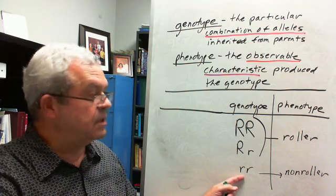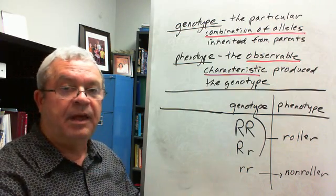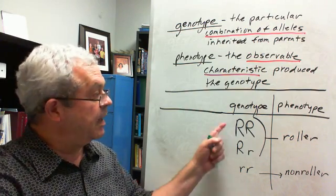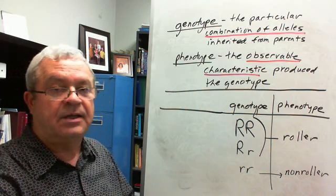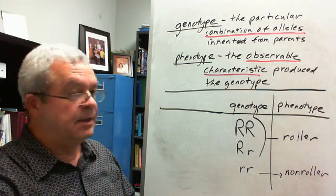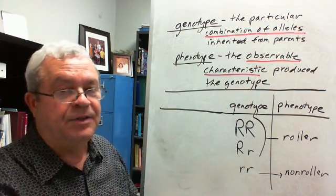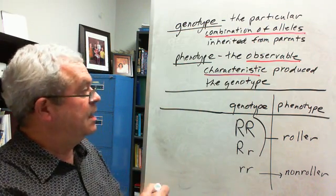Well, she knows what her genotype is. The non-roller does. If you're a non-roller, you have that genotype, right? If you're a roller like me, you automatically know what you are. Do you know if you're homozygous dominant or heterozygous? No, you don't. You could figure it out by analyzing your family. We'll talk about some of that.